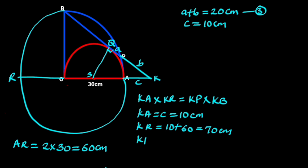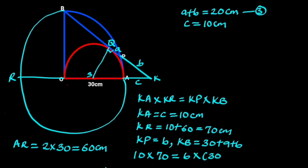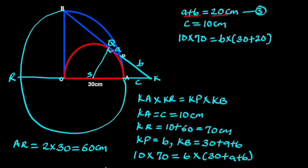KP equals b, and KB equals 30 plus a plus b. Substituting these values: 10 times 70 equals b times (30 plus a plus b). From equation 3, a plus b equals 20, so substituting: 10 times 70 equals b times (30 plus 20). On the left side, 10 times 70 is 700. On the right side, 30 plus 20 is 50, so 700 equals 50b.